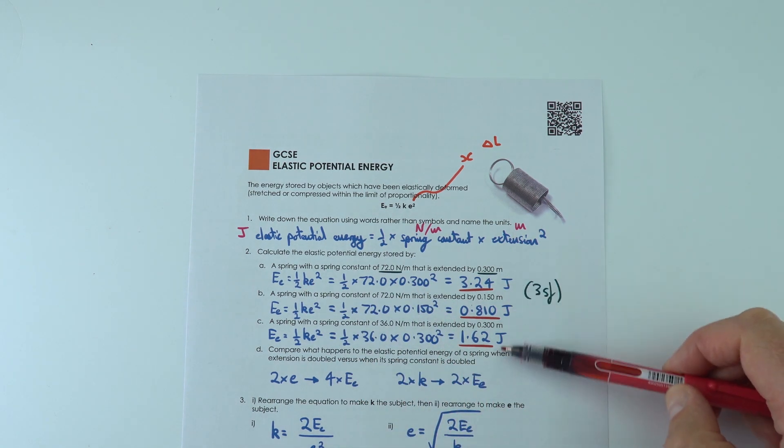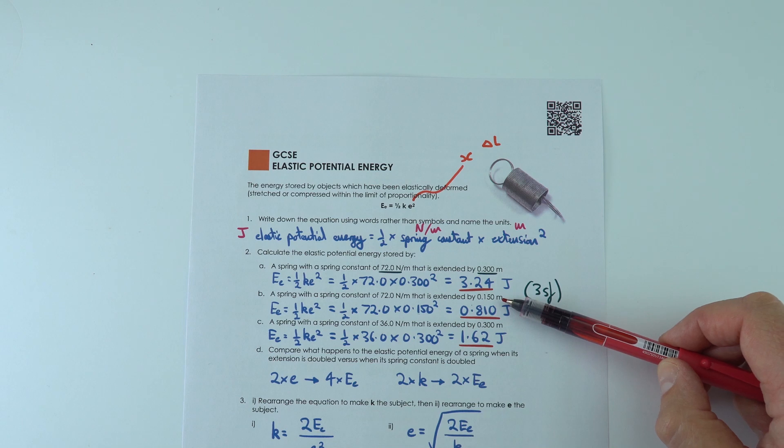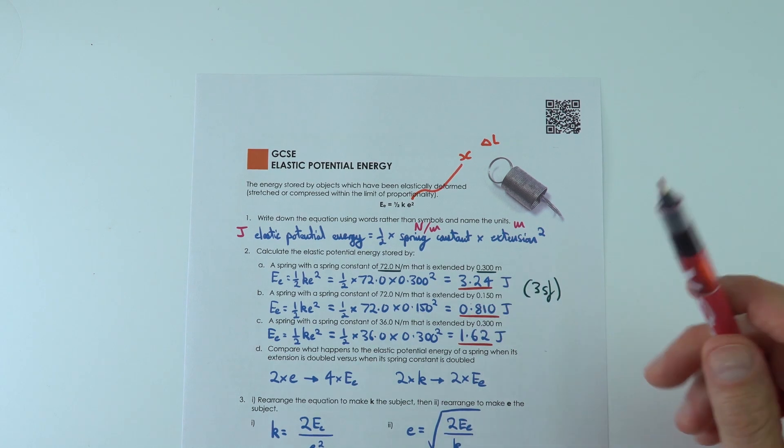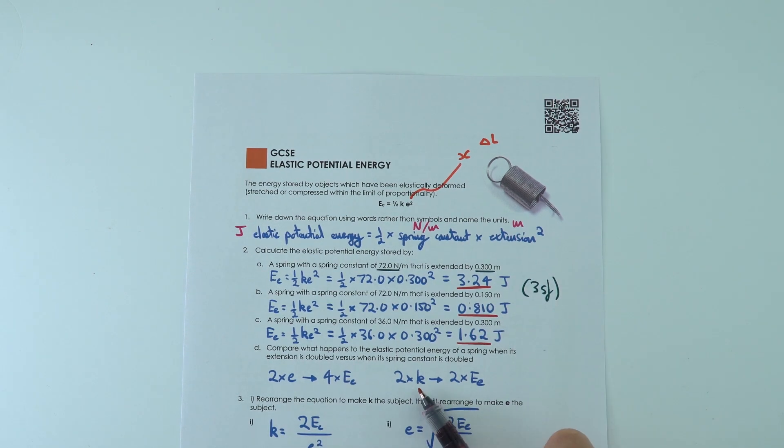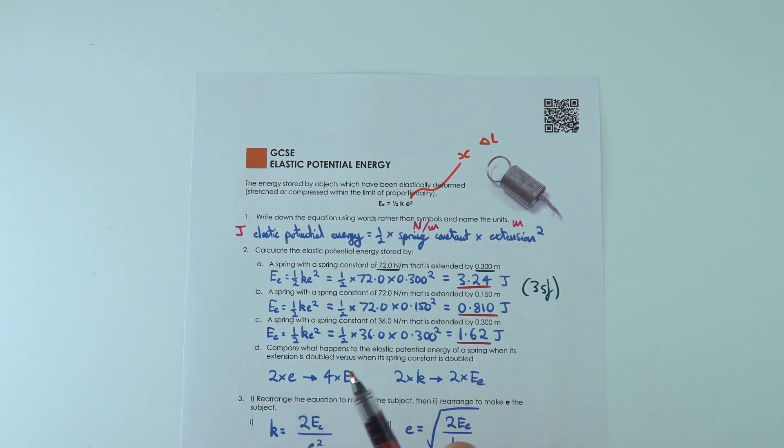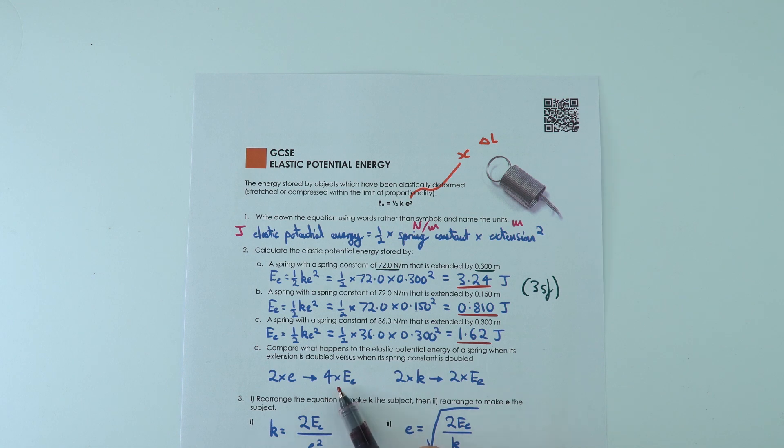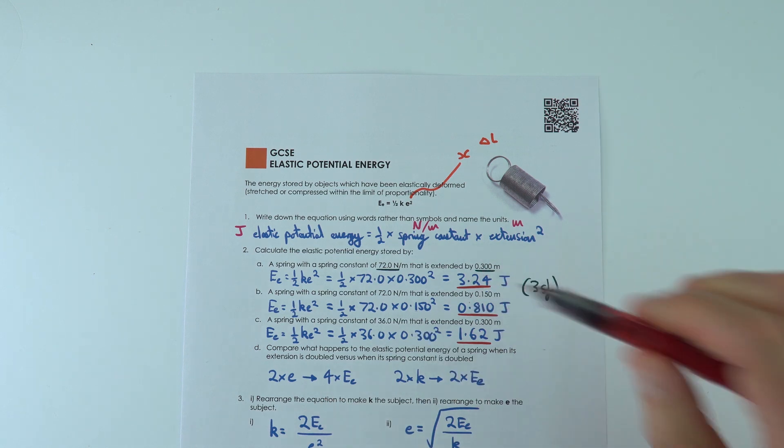And actually what we find is just a bit like kinetic energy, if you double the spring constant you double the energy stored. But if you double the extension there's four times as much energy stored within that, and we can see that from the numbers over here.